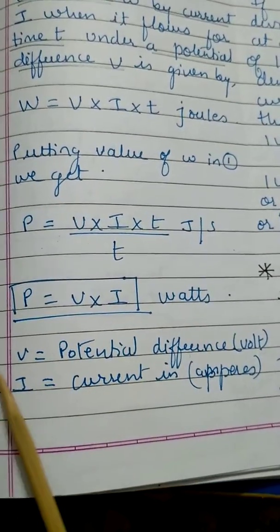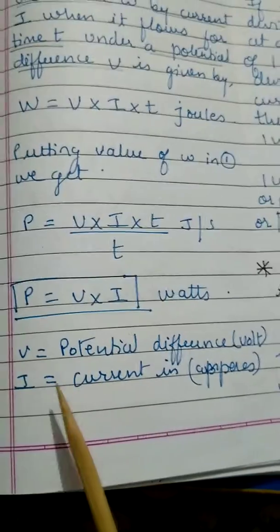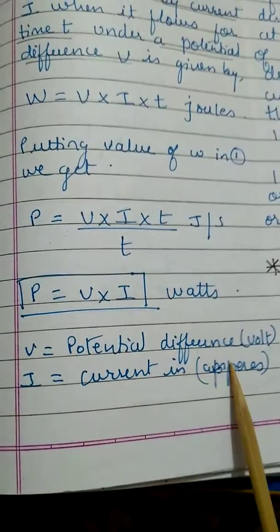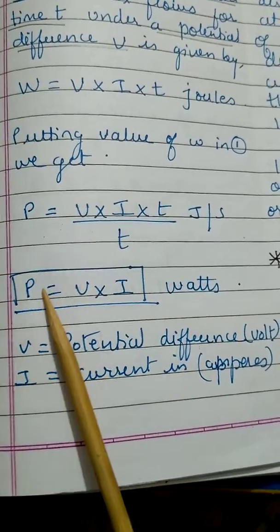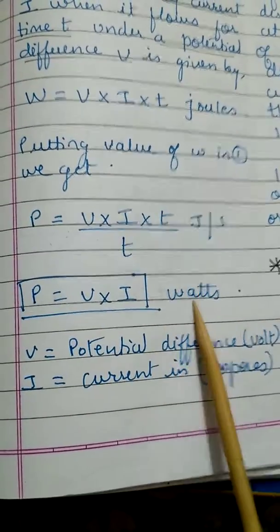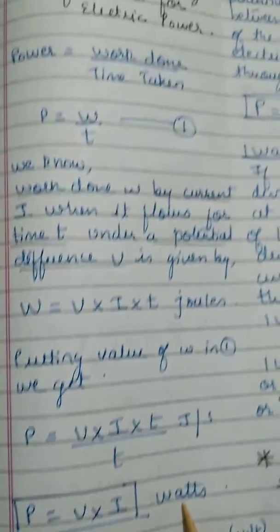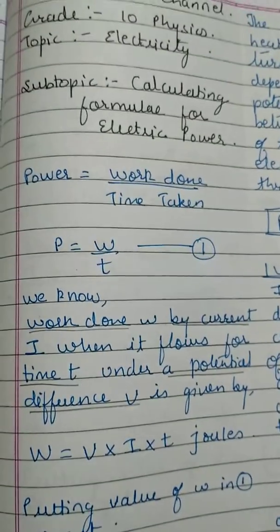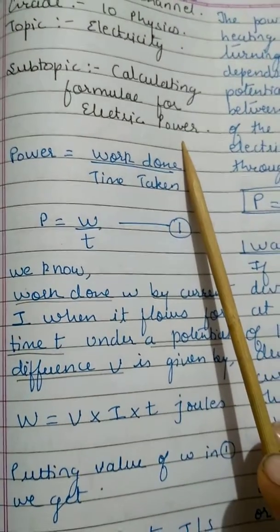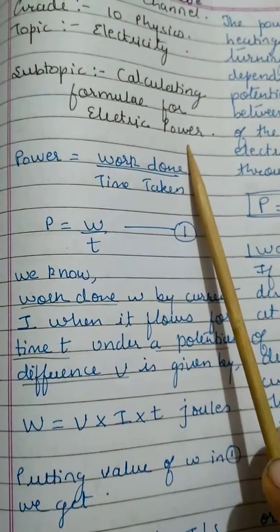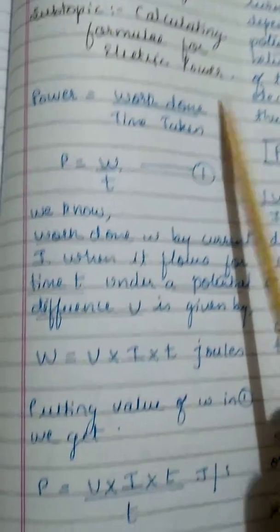So in this formula, V is the potential difference in volts and I is the current. Potential difference multiplied by current gives power, and its unit is watt. In this video we are going to see different formulas to calculate electric power when we have different sets of information given to us.